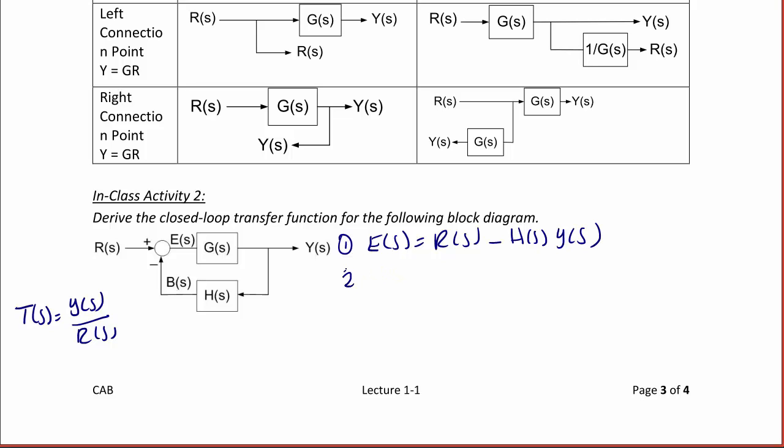Our second equation is that Y(s) is equal to E(s) G(s). So now we want to substitute equation one into equation two, and we get Y(s) is equal to the quantity R(s) minus H(s) Y(s) times G(s).